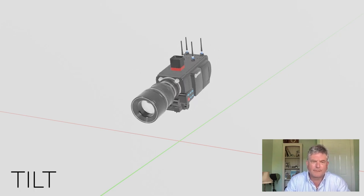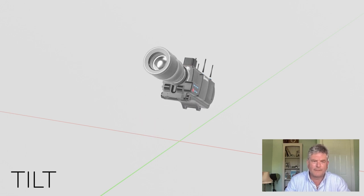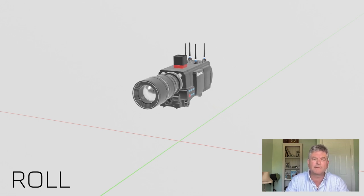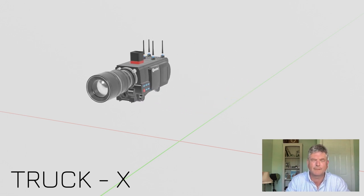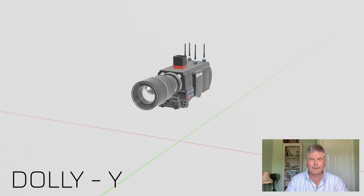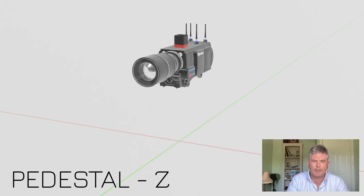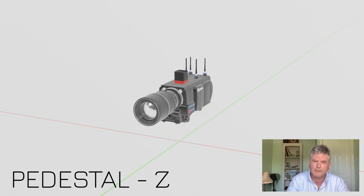In addition to the six axes, we typically have two additional data points: focus and zoom. There's an encoder on the lens that captures focus and zoom, combined with a map of that lens. The reason we have the lens mapped is that the output from Unreal Engine is CGI — it's perfect — but lenses aren't perfect. They're very linear in the middle and they distort at the edges. So if you want a perfect match of your Unreal scene, you want to distort the scene the same way as the lens you're using.